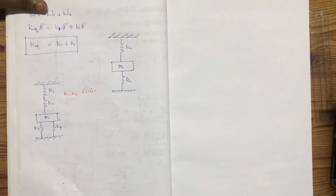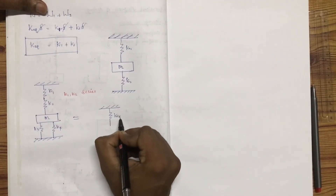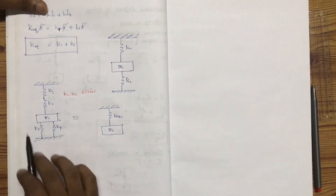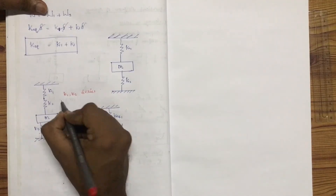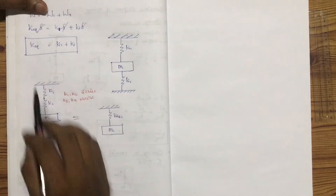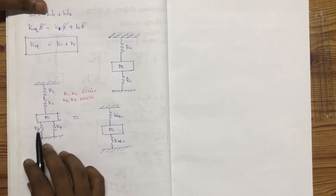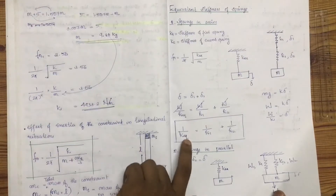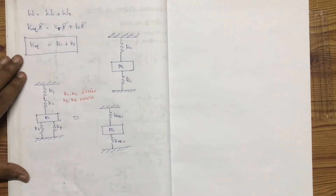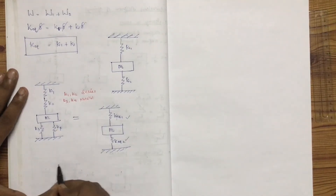Now we have K1 and K2 which are equal to K2. We introduce K3 and K4 which are in parallel. That means K3 and K4 are parallel, and the parallel equivalent equals K1 plus K3 plus K4. K equals 2, and K1 plus K2 equals 2, K3 equals 2, K2 equals 2.